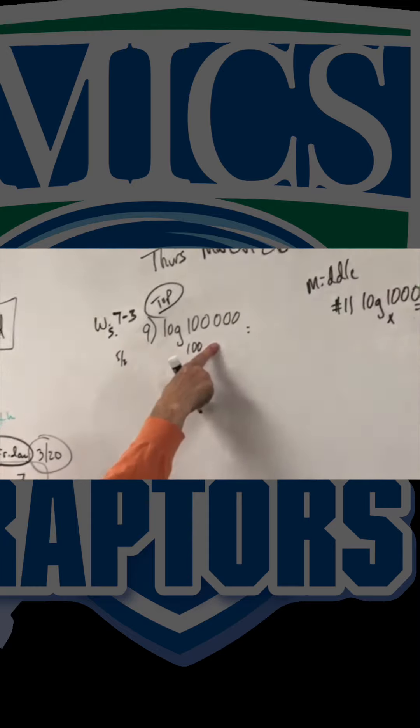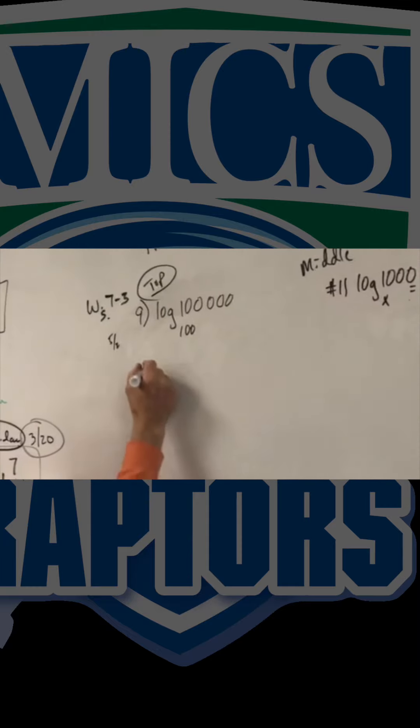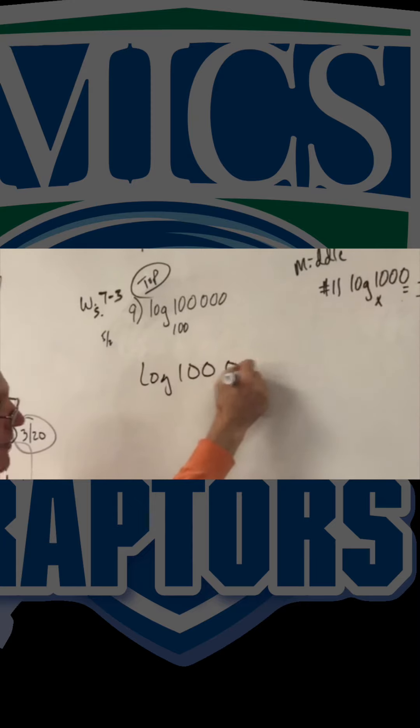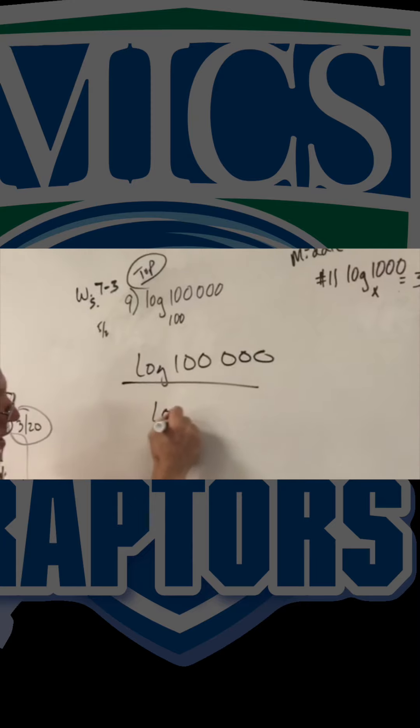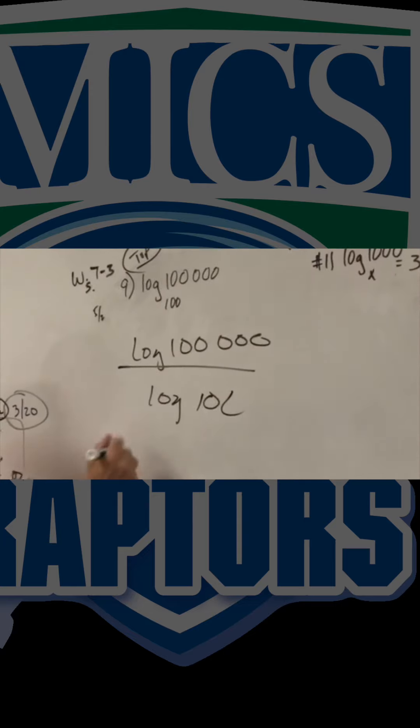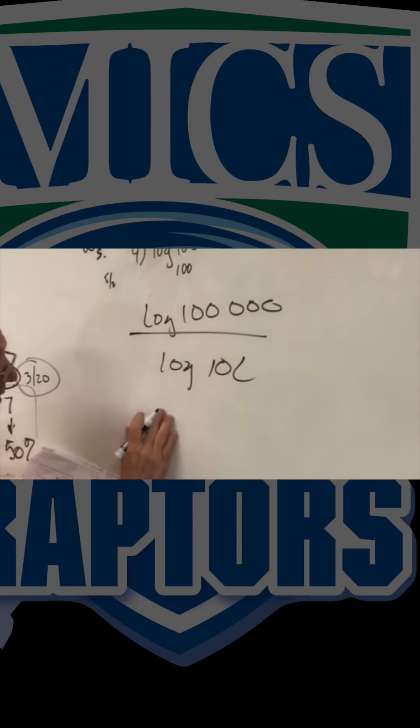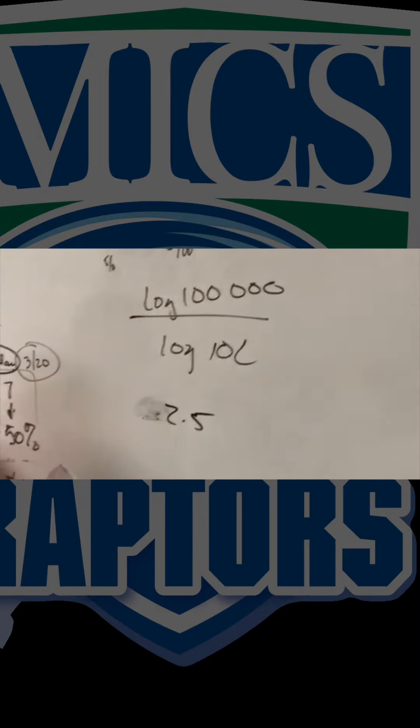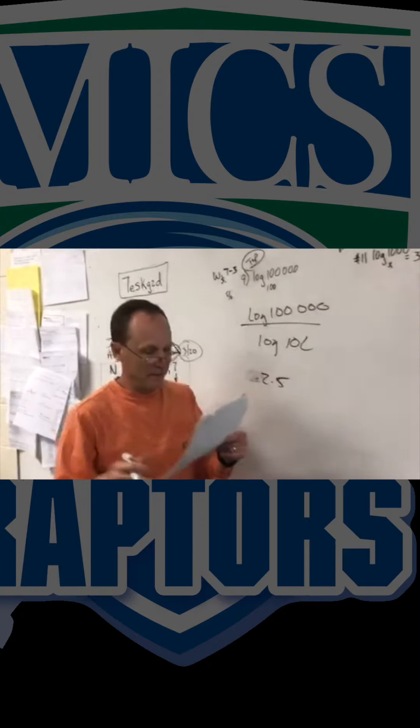But you guys, this is that split rule. When you see something like this, you just split it into two problems. The log of 100,000 divided by the log of 100. And you don't reduce anything down. You let the calculator do. And this will end up being 2.5. And I know the answer was wrong on the sheet.